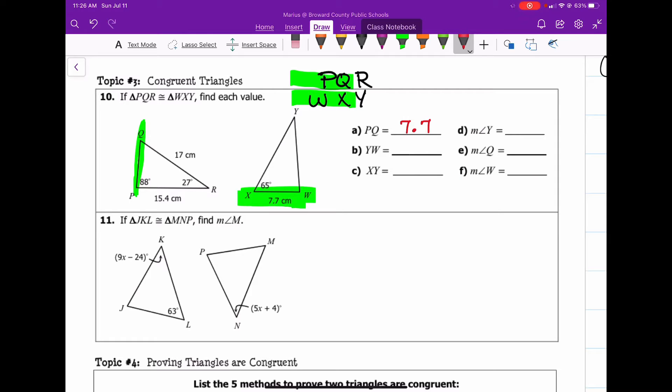Next, and I'm going to just go ahead and erase those markings. And now I can take a look at the next one, WY, or YW. YW is the same as PR. So YW is the same as RP, which is 15.4.